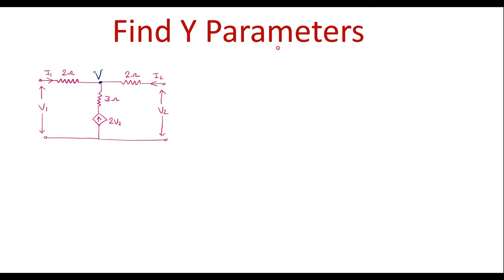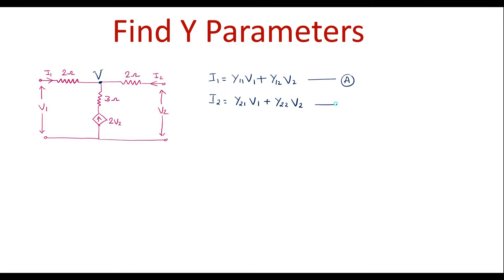First, let me write the Y parameter equations. Y parameters are represented as: I1 is equal to Y11·V1 plus Y12·V2. Similarly, I2 is Y21·V1 plus Y22·V2. I will call this equation A and this equation B. Here Y11, Y12, Y21, and Y22 are known as Y parameters and we need to calculate the same.